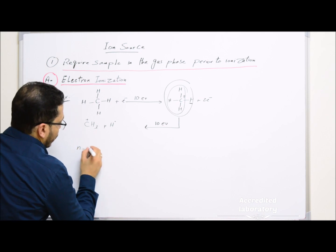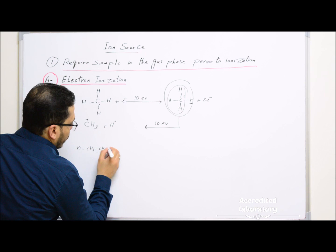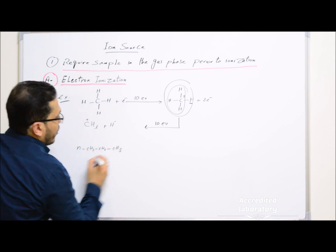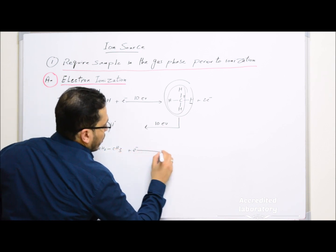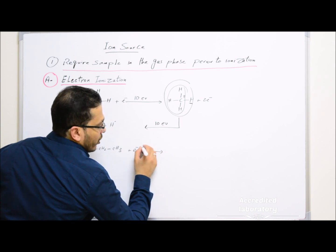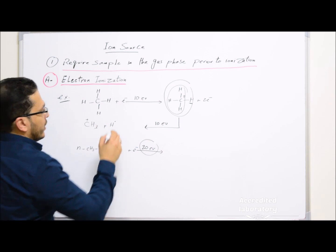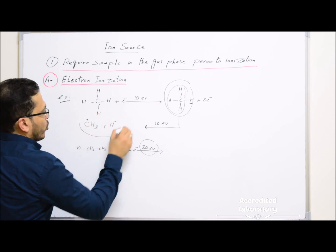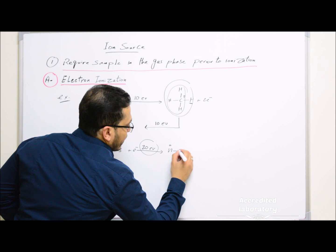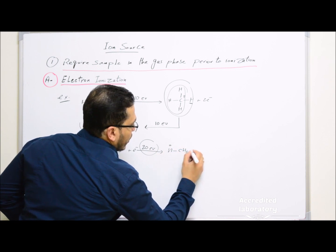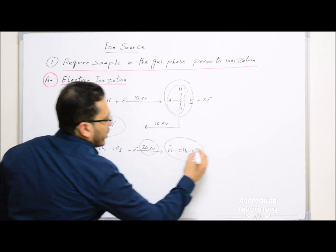Another example is butane (CH3CH2CH2CH3). By electron ionization using about 20 electron volts, we form product ions including N⁺ and CH3CH2⁺ as product ions.